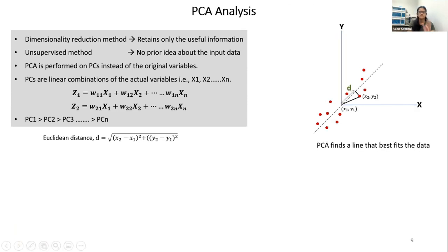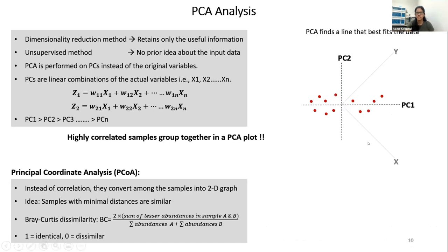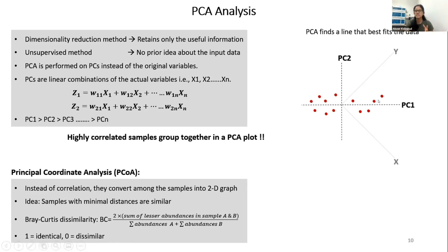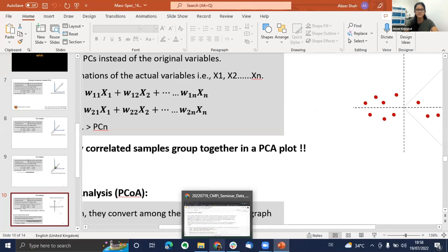For visualization we typically display PC1 and PC2. PCoA — Principal Coordinate Analysis — is similar to PCA but uses a different distance metric: Bray-Curtis distance. Instead of correlation, it calculates distances between samples and converts them into a 2D graph. When two points are close together they are similar; when far apart, dissimilar. Going back to the script, I arrange the row names of the metadata and column names of the feature table in the same order, check data sparsity — zero because we did imputation — and confirm the names are in perfect order.